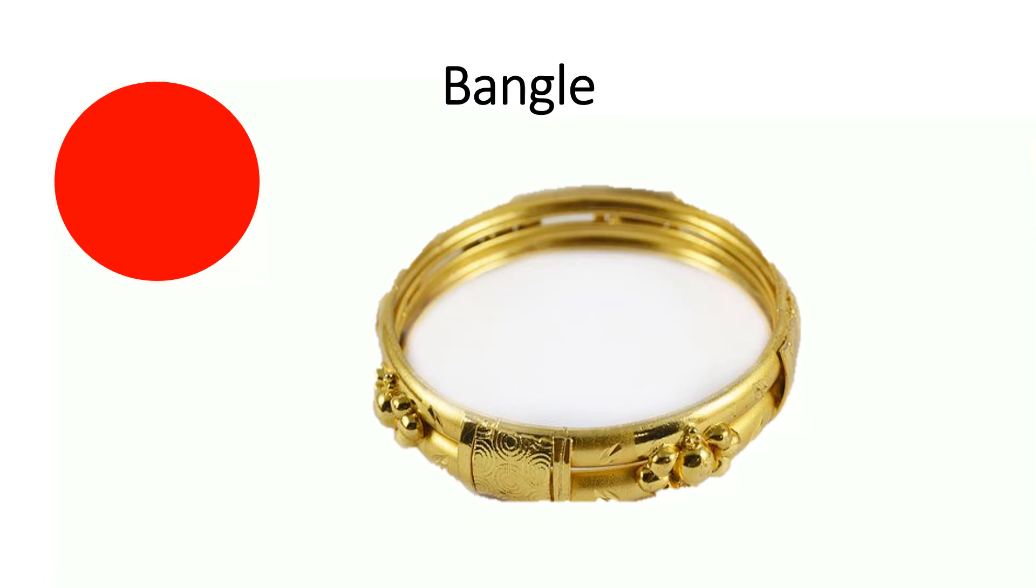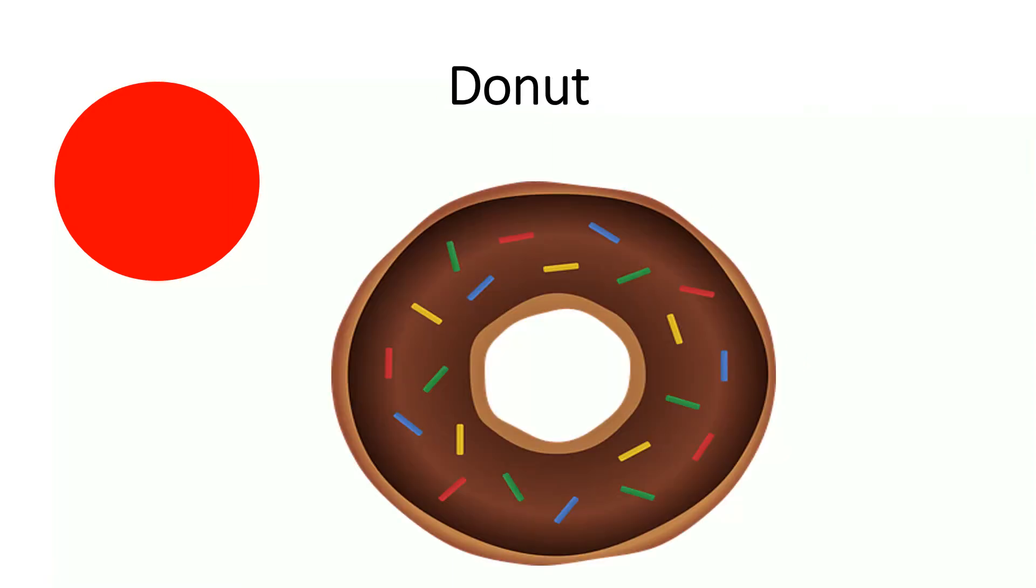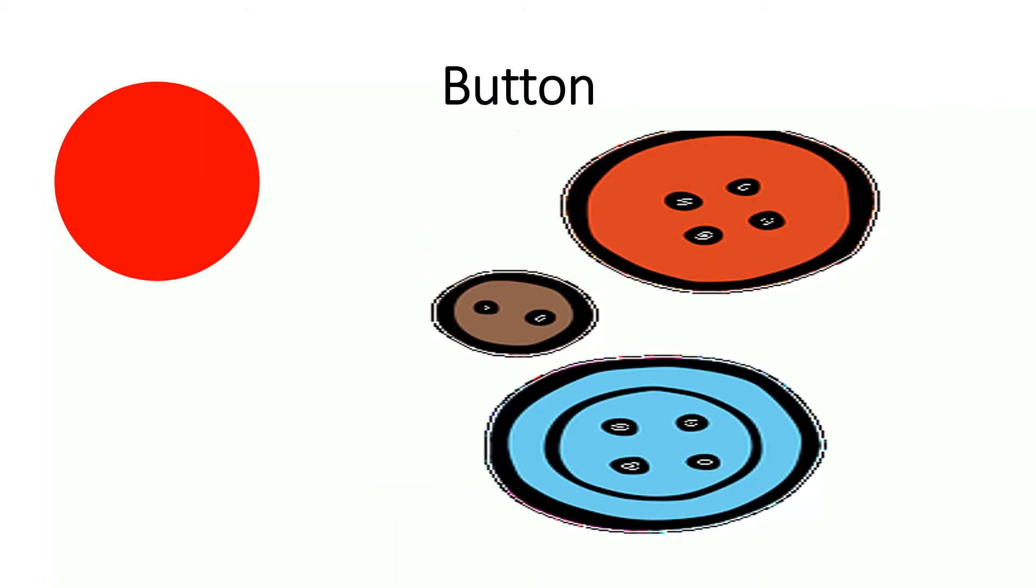A bangle is also a circle in shape. Donut is a circle in shape. Buttons are a circle in shape.